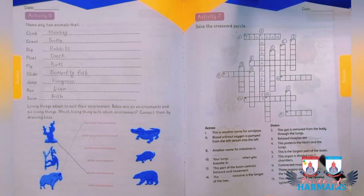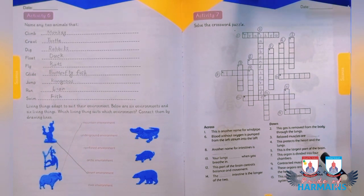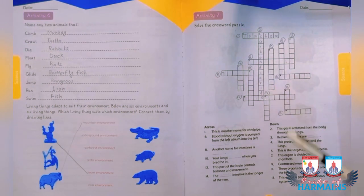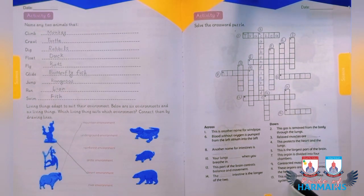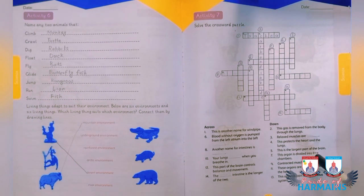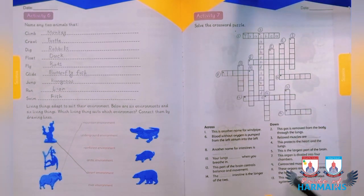The other clue: the largest part of the brain — the brain has many parts and the largest part can be the forebrain or cerebrum. You have to put the answer in the fifth blank. Another clue: an organ divided into four chambers — the heart is basically divided into four chambers. You have to put the given answer in the seventh blank.